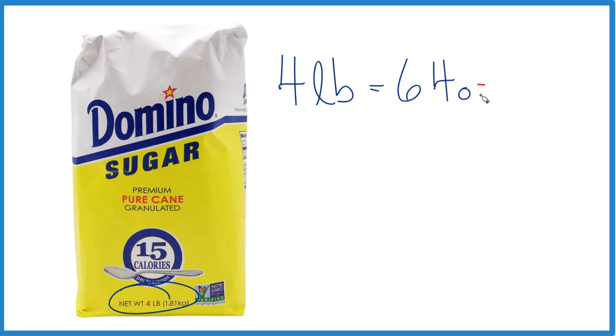We have 64 ounces in this four-pound bag of granulated sugar. What you need to know is that one cup of granulated sugar equals about 7.1 ounces. I tried this, and it really is about 7.1 ounces.